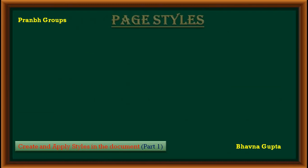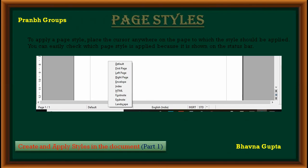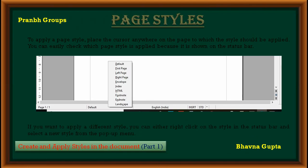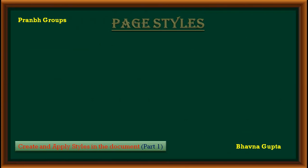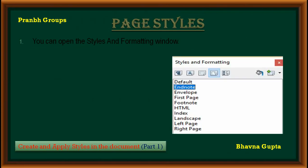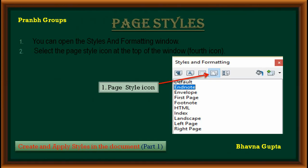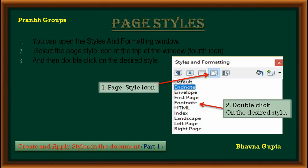Next is page style. To apply a page style, you can easily check the current style because it is shown on the status bar. If you want to apply a different style, right-click on the style in the status bar and then select a new style. A second method for applying a page style is to open the Style and Formatting window, select the page style icon, and then double-click on the desired style.